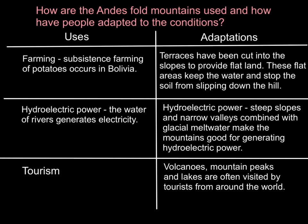The first use is subsistence farming, which occurs in Bolivia. Subsistence farming is when people farm to provide for their family and are not concerned about making a profit. Farming has been able to go ahead in Bolivia because terraces have been cut into the slate to provide flat land. These flat areas keep the water and stop the soil from slipping down the hill. This is how the people of the Andes have adapted so that they are able to farm.